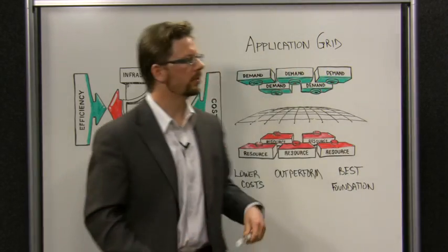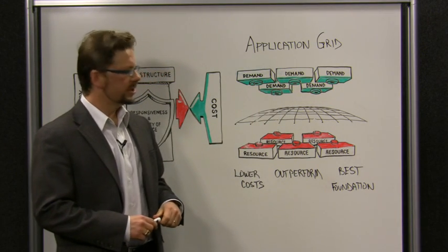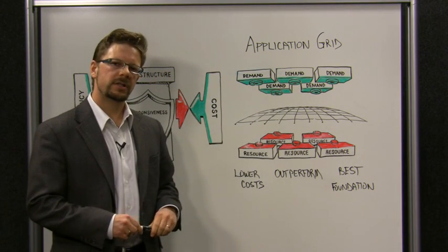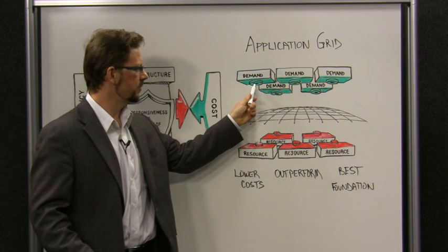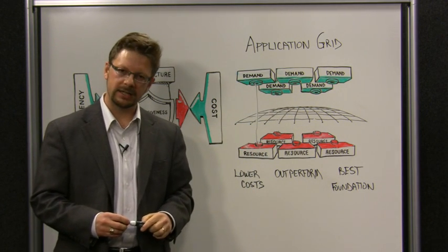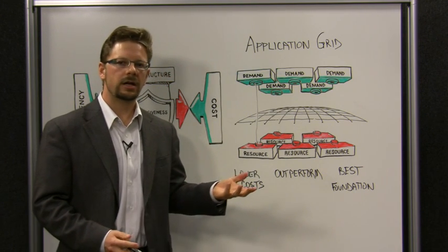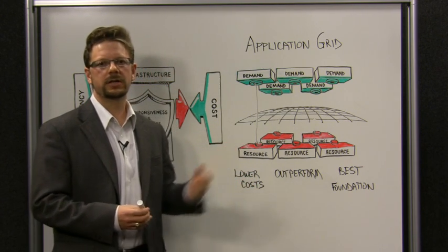The answer is a new approach: application grid. In traditional IT architectures, you typically have a one-to-one mapping between a demand and the resource that supplies that demand. A dedicated stack—an application running on an app server, running on an instance of an OS, running on its own server.